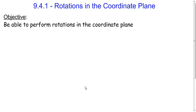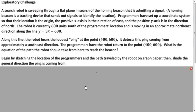Hello class! In this lesson we're going to learn how to perform rotations in the coordinate plane. In our first example, we have a robot that's searching for a homing beacon, and the path of the robot is modeled by this equation: y equals 3x minus 600.